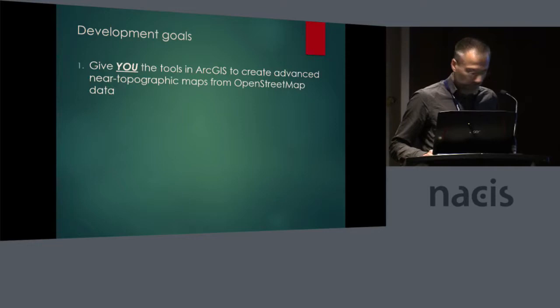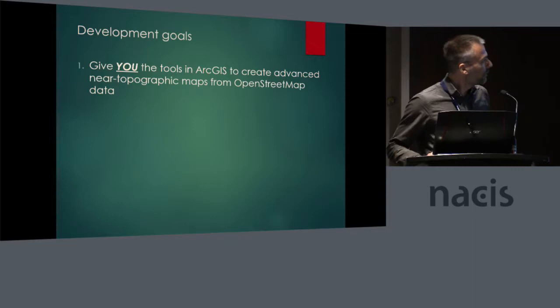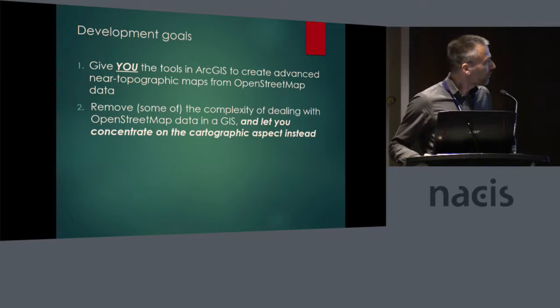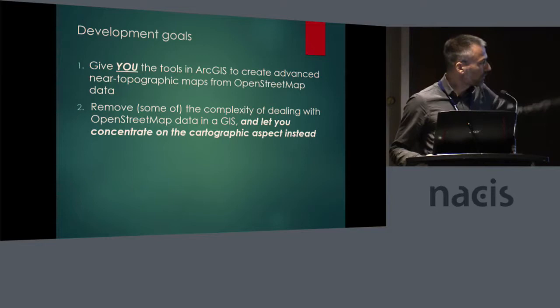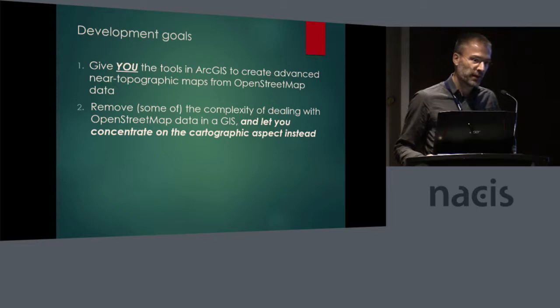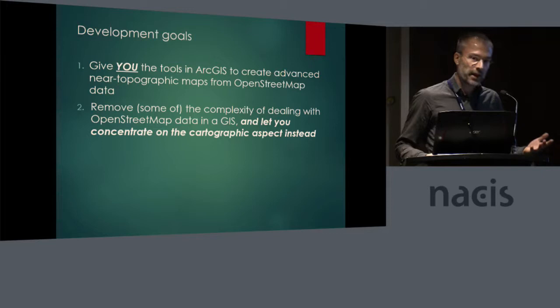So what were the development goals of the toolbox? To give you the tools in ArcGIS to create advanced near-topographic maps from OpenStreetMap data — especially to remove some of the complexity of dealing with OpenStreetMap data. The last point is really important: you should be able to concentrate on the cartography, instead of being overwhelmed by the data and how to deal with it. You should be able to simply use the tools in ArcGIS to symbolize it and start working, instead of worrying about layering and other stuff.